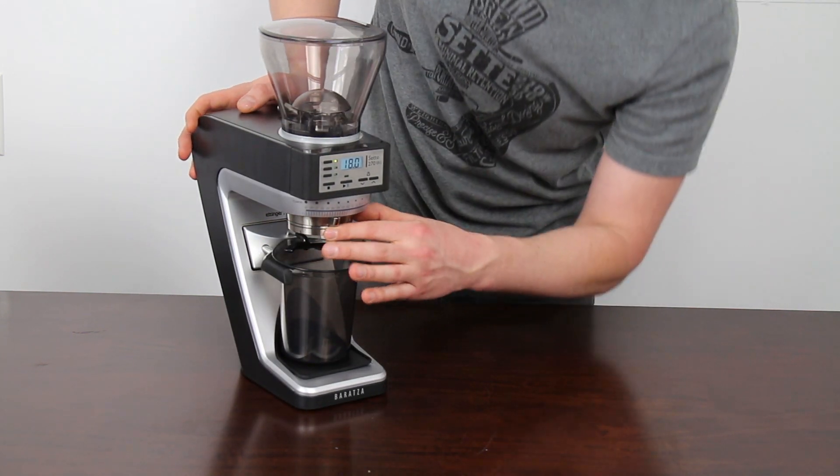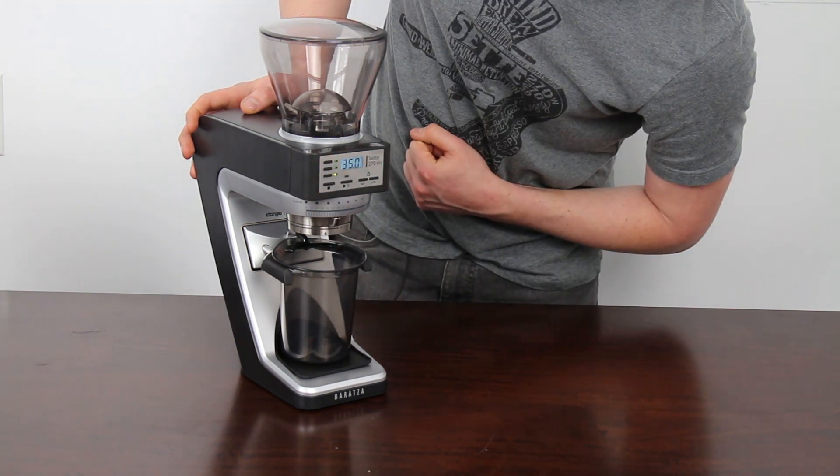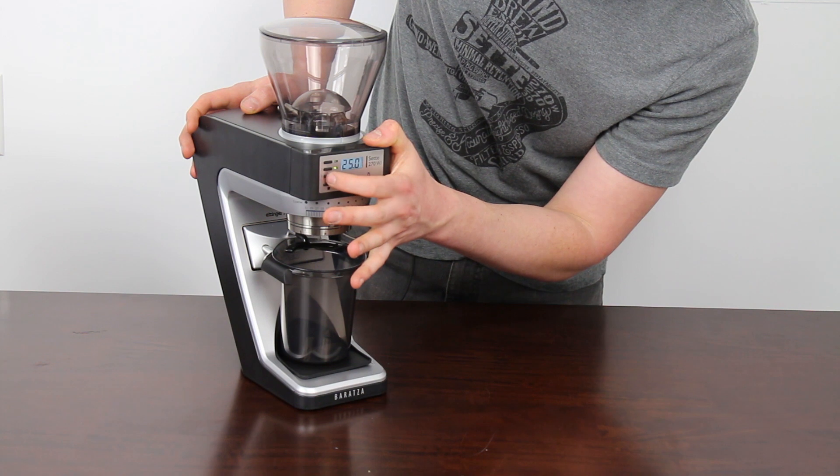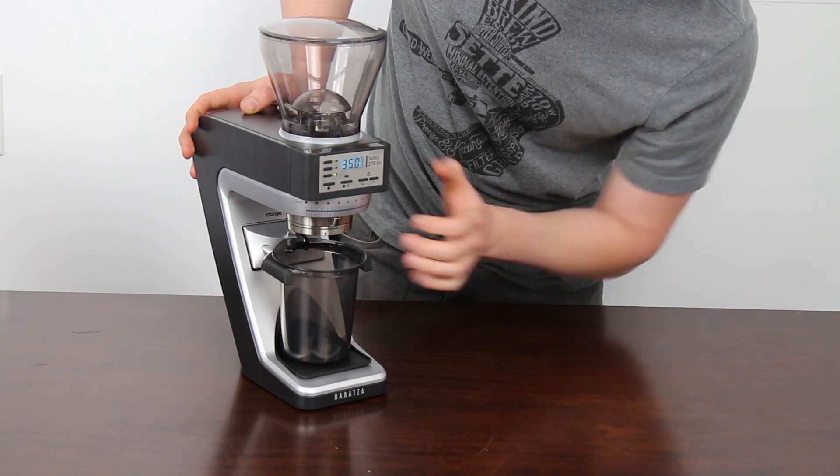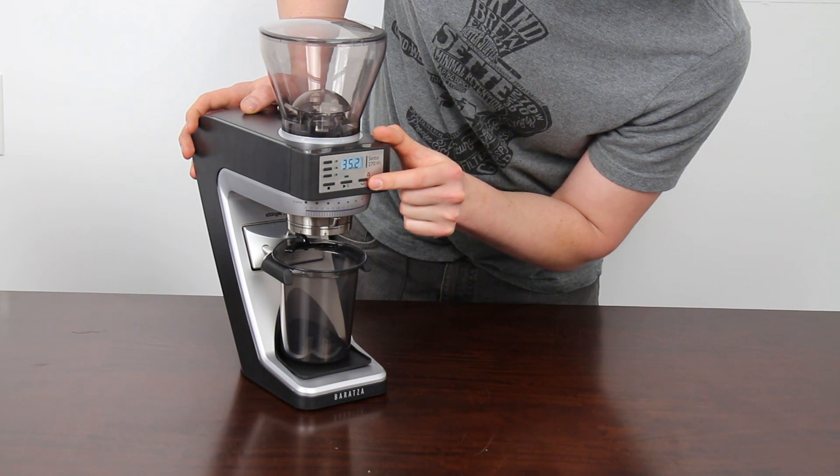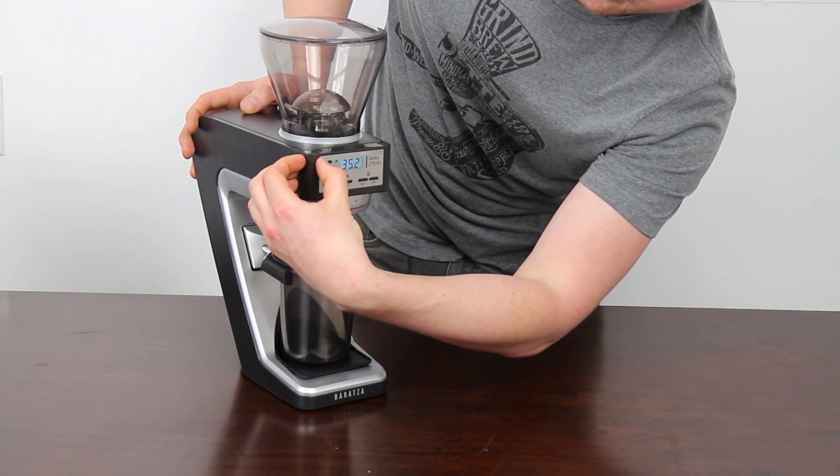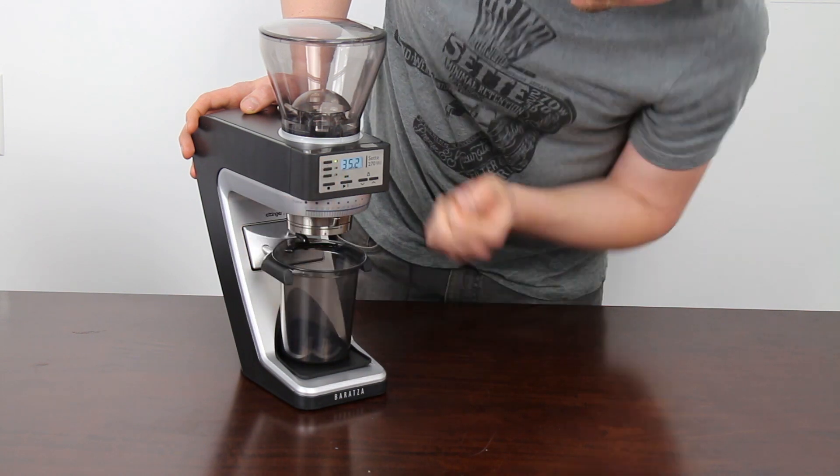I'll go ahead and set it in the middle at about 18 and next I need to select a grind weight. There's three presets on the 270Wi and these presets are adjustable by using the up and down arrows. To permanently save a preset simply hold one of the buttons until it flashes just like a car stereo.